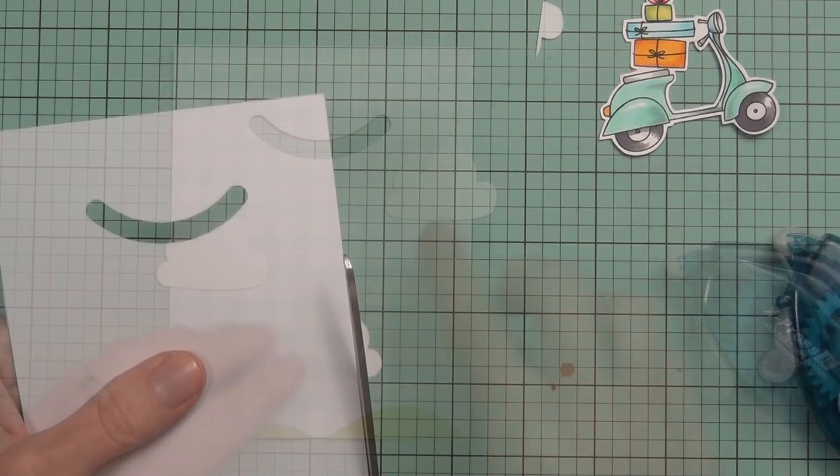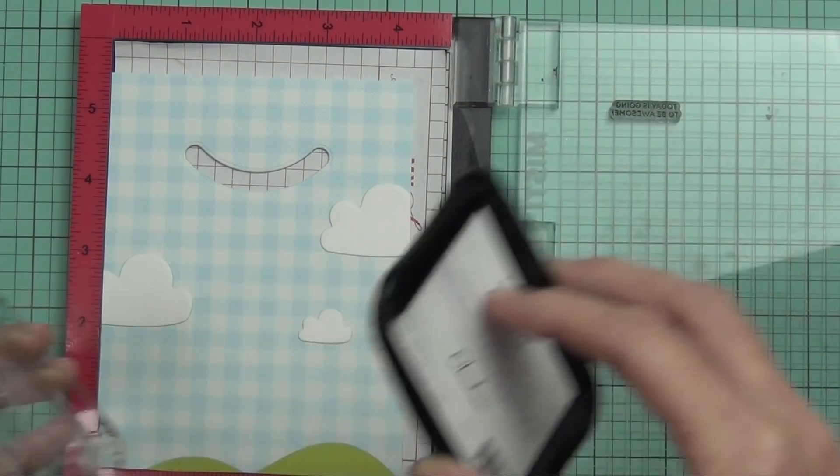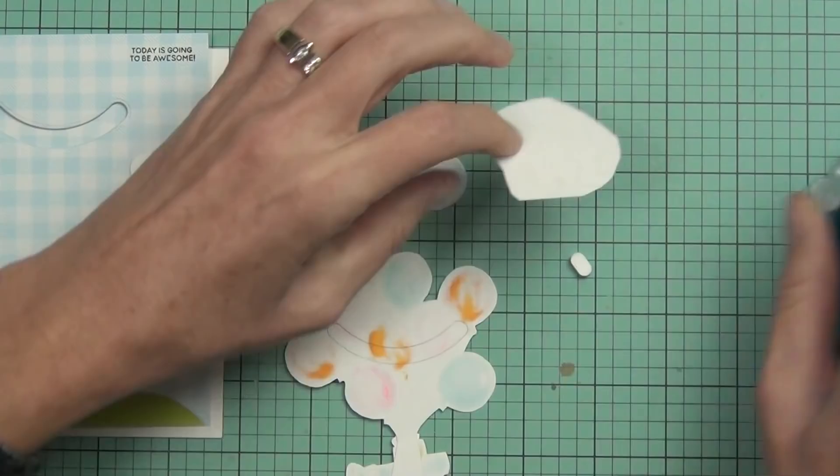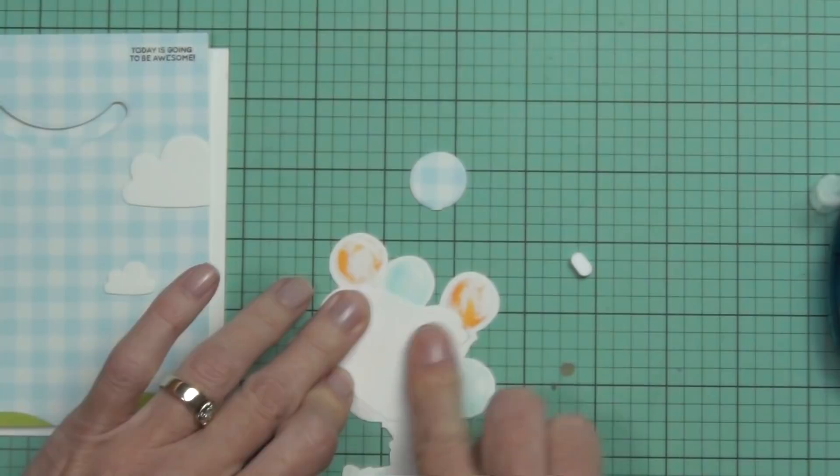I've added some Waffle Flower clouds which I've die cut. If you are going to add any other elements to the background, make sure that they're not popped up where the swinging image is going to be, because they will stop it from swinging. Either add them away from that area or directly to the front of the card.